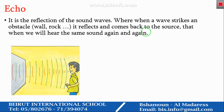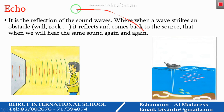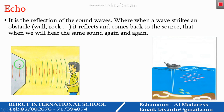As we said before, echo is the reflection of a sound wave, where when a wave strikes on an obstacle, it reflects and comes back to the source. That's why we will hear the same sound again and again. The example shown in this picture: this buoy is emitting a sound wave. When this wave strikes the wall, it reflects back and returns to the buoy.